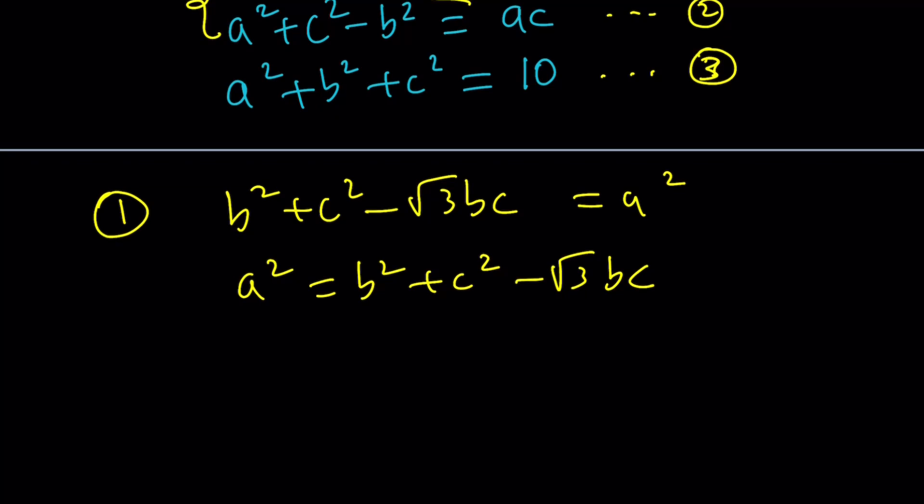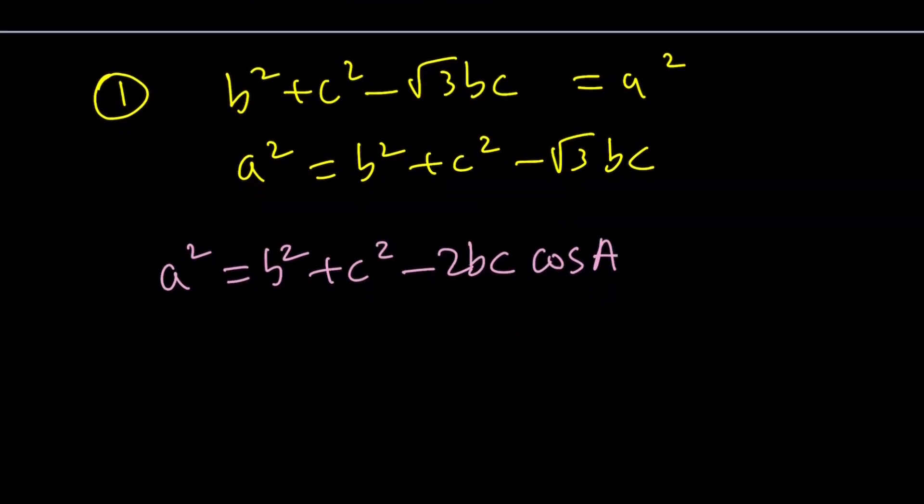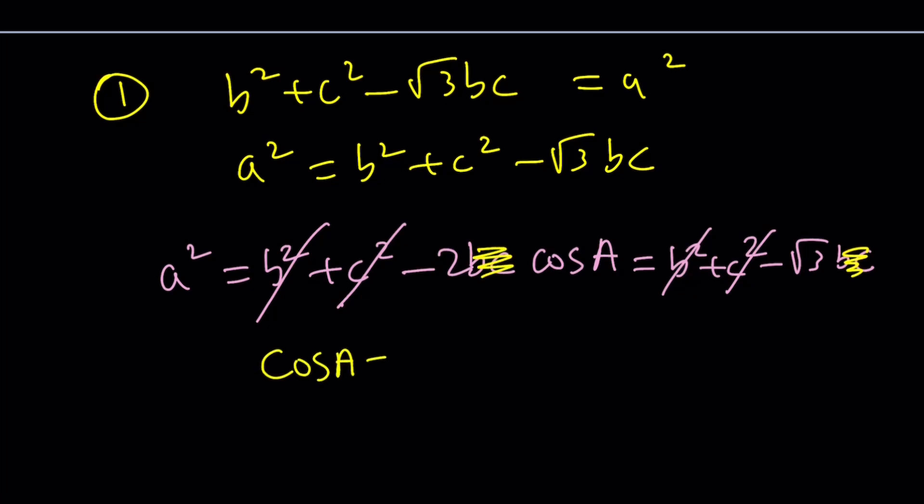You know what that looks like? This is the inspiration for this problem. The inspiration is law of cosines. What is law of cosines? a² = b² + c² - 2bc cos A. If you go ahead and set this equal to b² + c² - √3bc, b² + c² cancels out, and the bc cancel out. We end up with something super nice: cos A = √3/2.